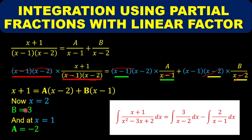Now let's determine A. We need to eliminate B, so ask what value of x makes the B term zero. Since the B term has (x-1), putting x=1 gives 1-1=0, eliminating B. Substituting x=1: left side gives 1+1=2. The A term gives 1-2 = -1, so A·(-1) = -A. Therefore -A = 2, which means A = -2.